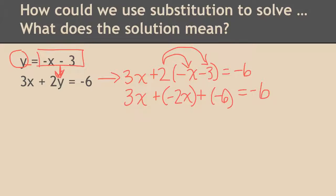So all I did was I distributed. Now I've got some like terms I can put together. 3x's and a negative 2x is x plus negative 6 equals negative 6. So it appears x has to be 0.